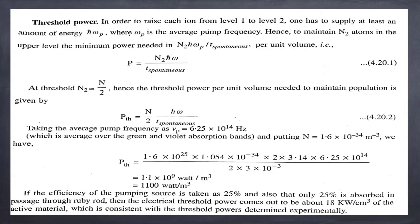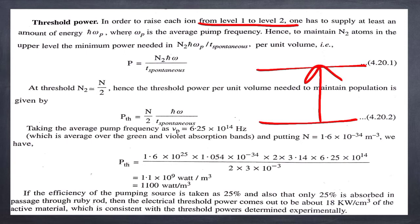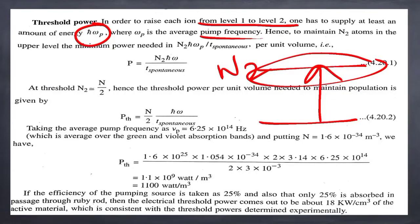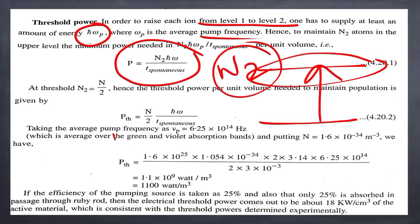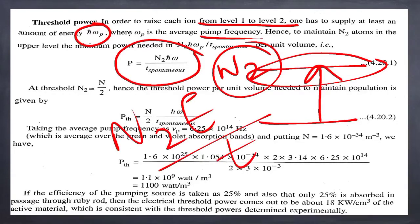To raise each ion from level 1 to level 2, we need to supply at least energy ℏωp, where ωp is the average pump frequency. To maintain N₂ atoms in the upper level, the minimum power required is N₂ · ℏωp / τ, where τ is the spontaneous lifetime.